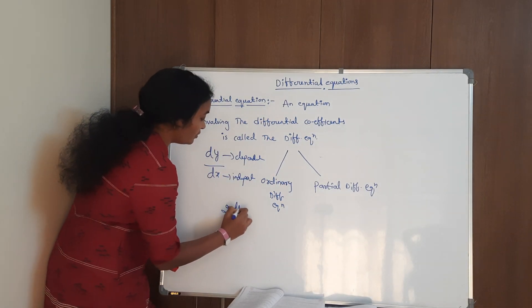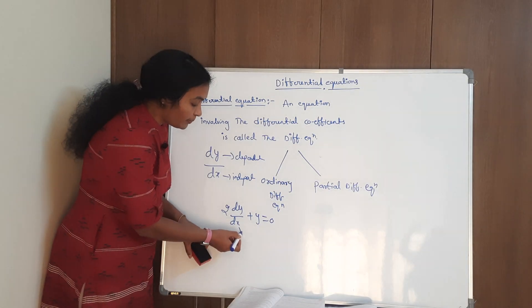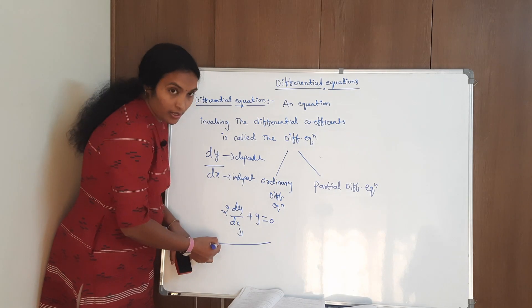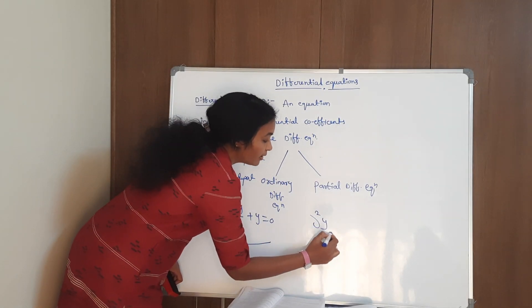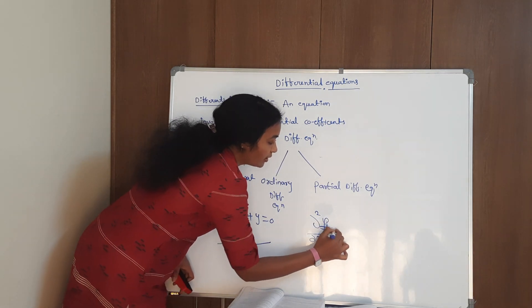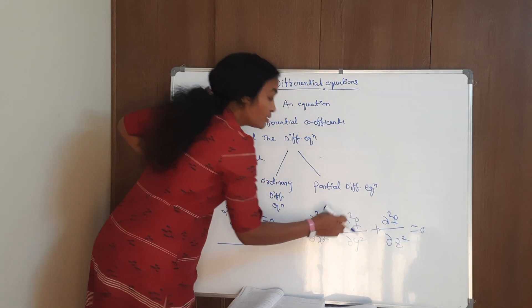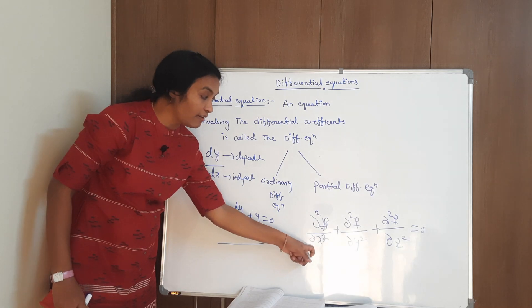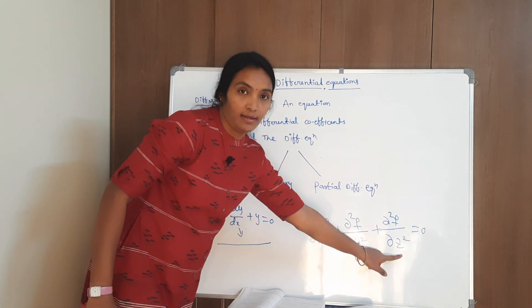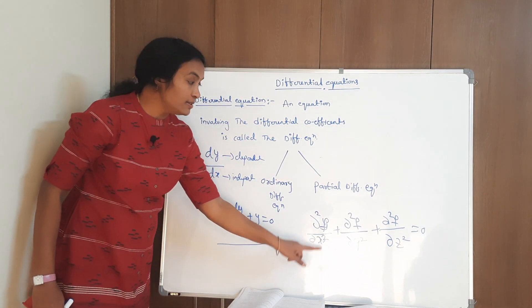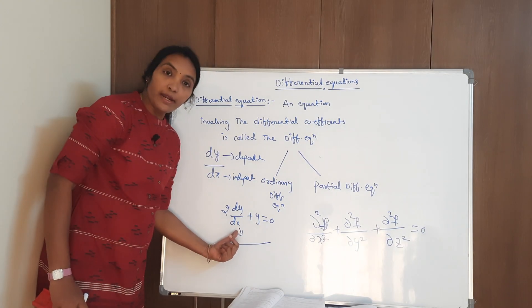For example, 2 into dy by dx plus y is equal to 0. In this equation, the differential coefficient has only one independent variable, which is x. That is nothing but an ordinary differential equation. The main difference is that in partial differentiation, it is denoted by ∂ (dou). For example: ∂²f/∂x² plus ∂²f/∂y² plus ∂²f/∂z² — this is a partial differential equation, having x, y, and z as three independent variables. So a partial differential equation has two or more independent variables, while an ordinary differential equation has only one independent variable.